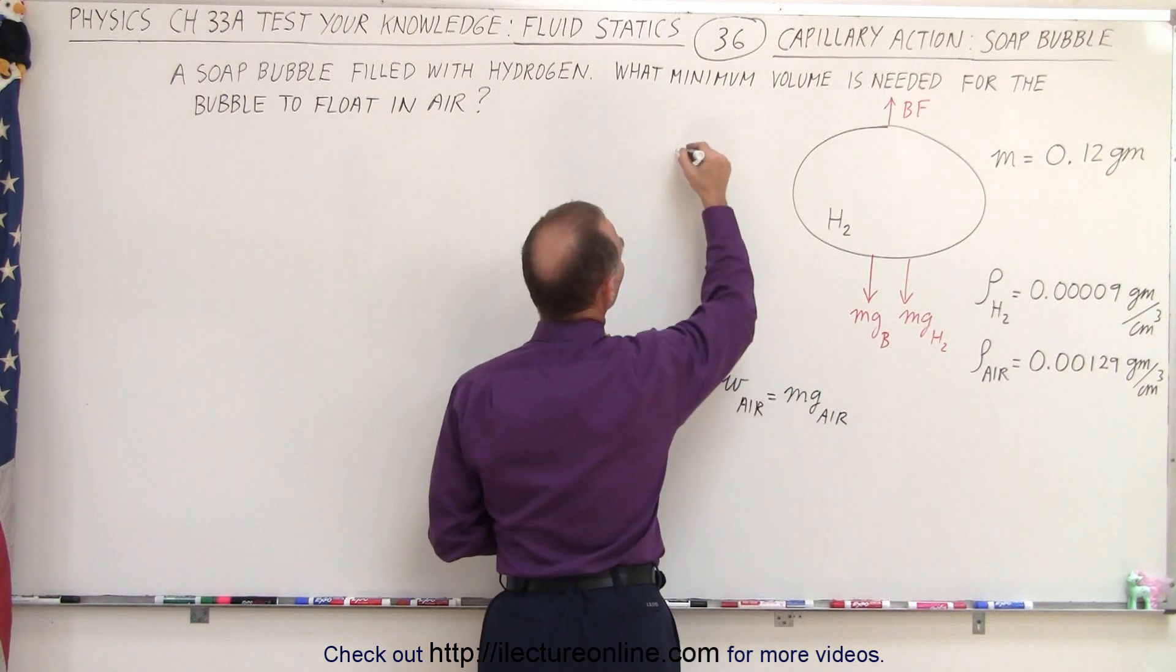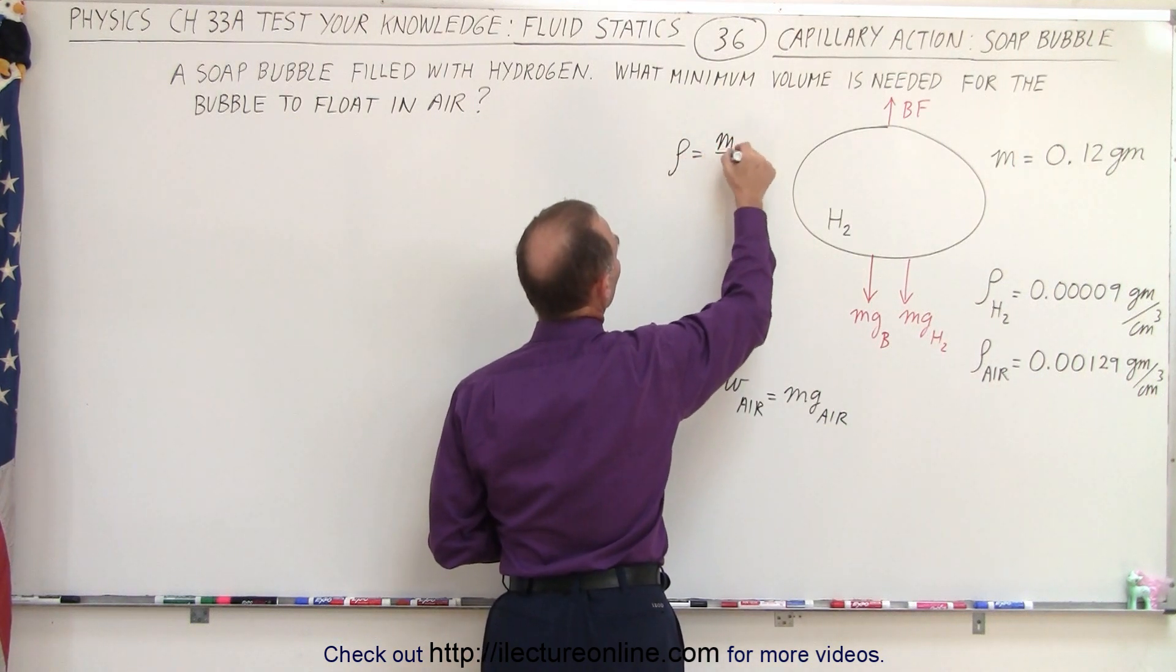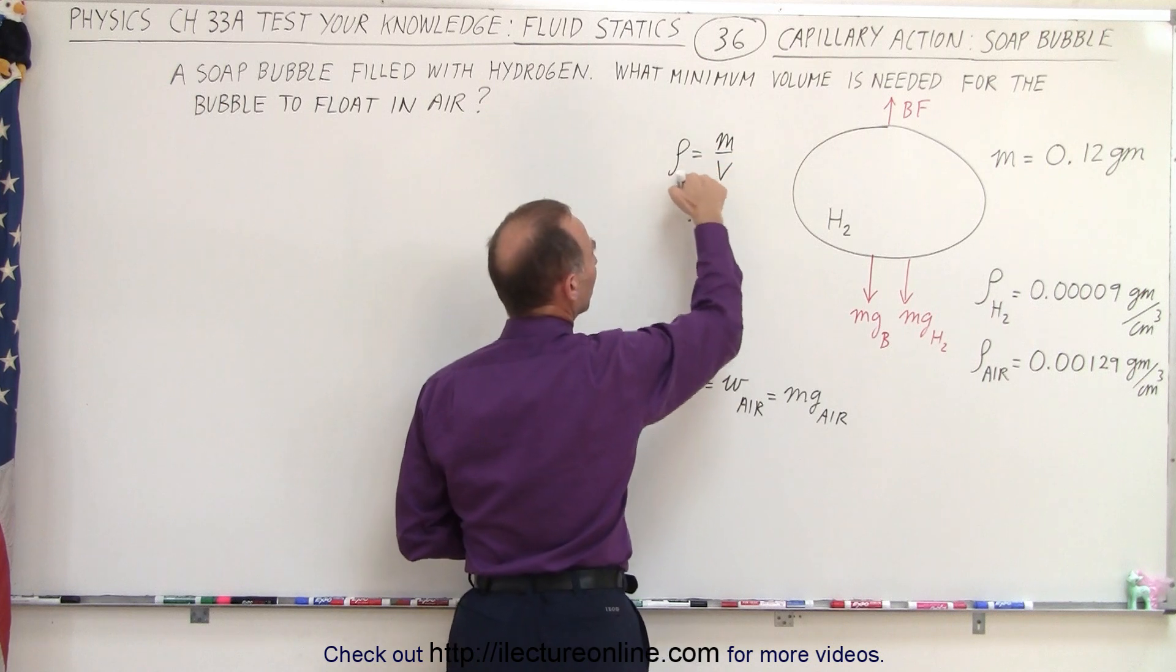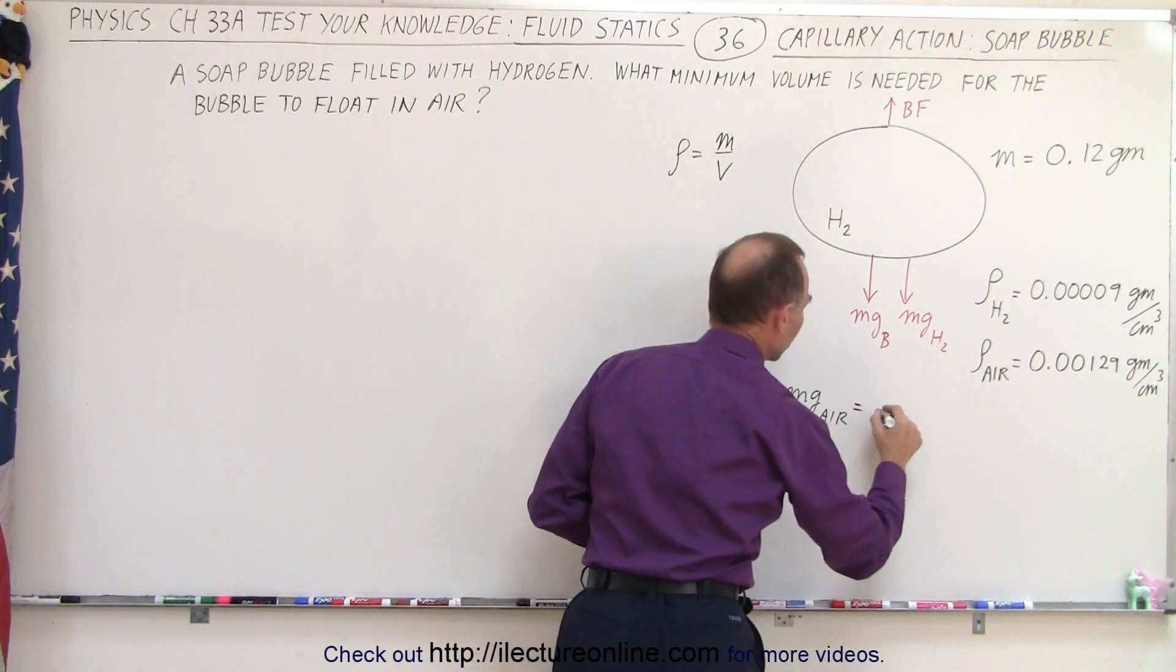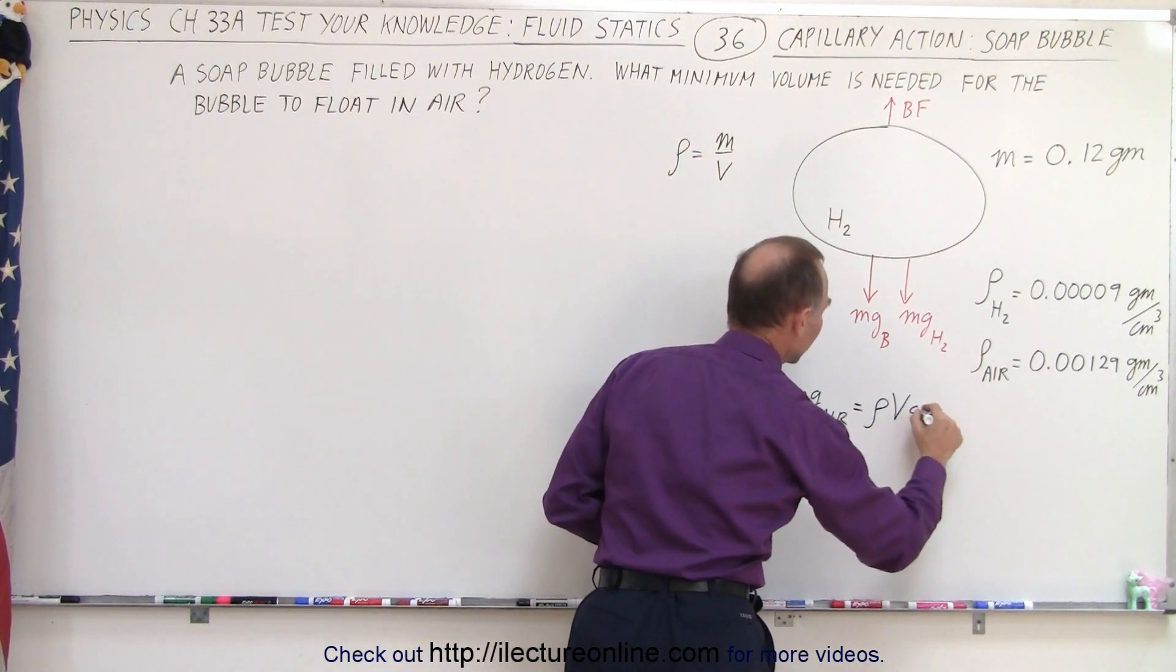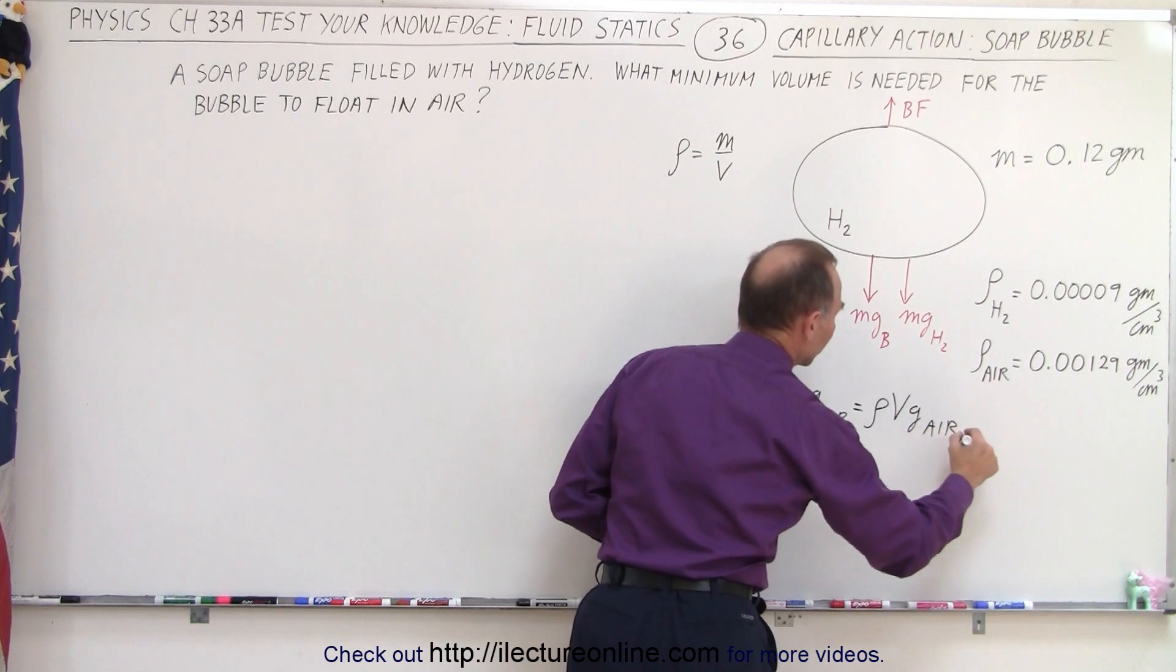And of course, since we know that the density is equal to the mass divided by the volume, the mass can be written as the product of those two. So density times volume times g of the displaced air.